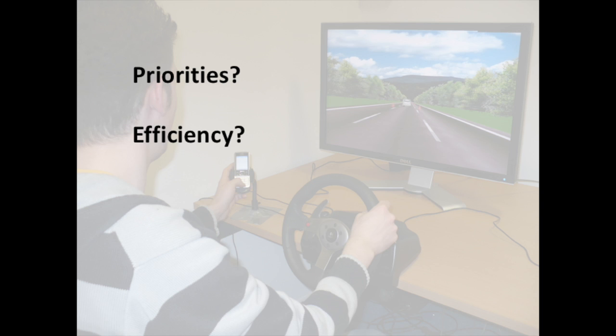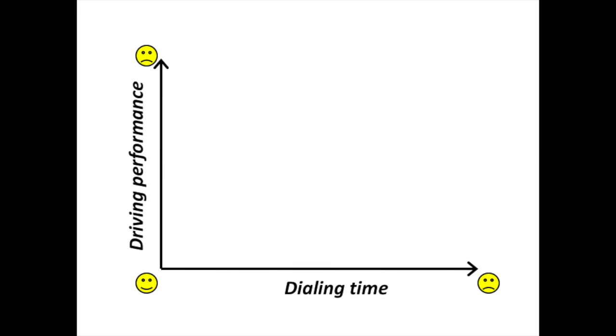There are many ways in which dialing and steering can be interleaved in this scenario. In order to understand human performance, it is good to consider it in the context of these other interleaving strategies. We used computer simulation models to predict performance of such strategies. In this plot, we will illustrate performance.